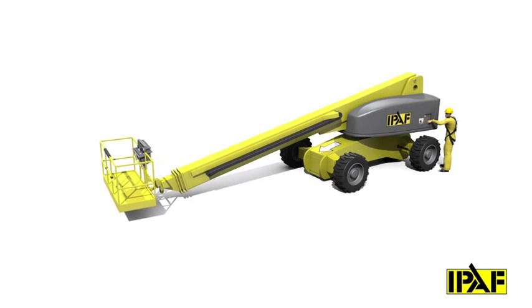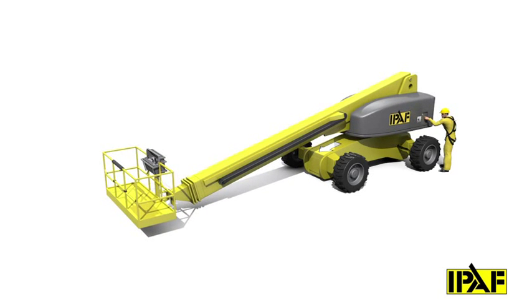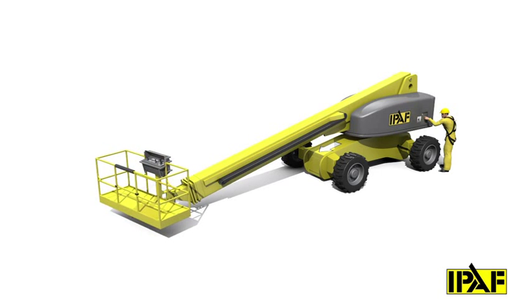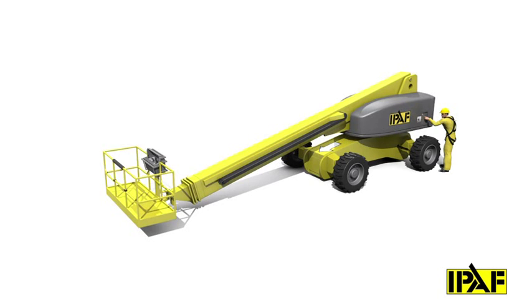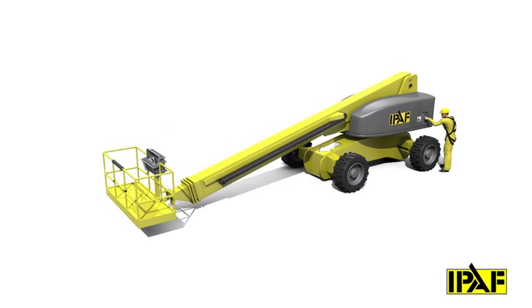telescope out and in, basket slew left and right and basket level up and down. Continue until all machine ground controls are checked and fully functional.